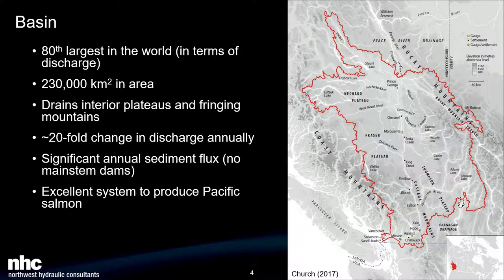A really unique characteristic of the Fraser is the freshet, where we have a 20-fold change in discharge annually — low winter flows, then in May, June, and July flow kicks up as the snow melts in the mountains. Another unique aspect of the Fraser basin is a really substantial annual sediment flux, largely because we don't have much in the way of mainstem dams on the Fraser itself, which is very unique for a river this big. All these physical conditions work to produce a system that's excellent for Pacific salmon.